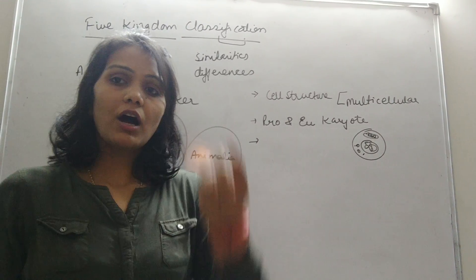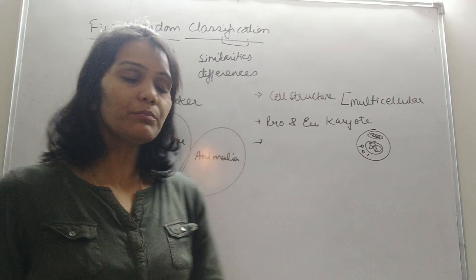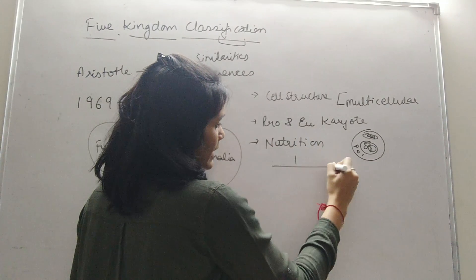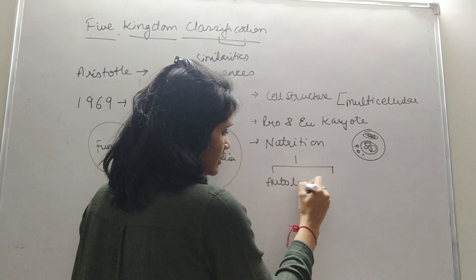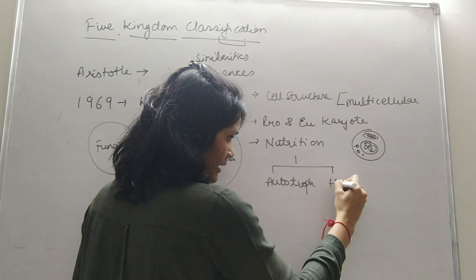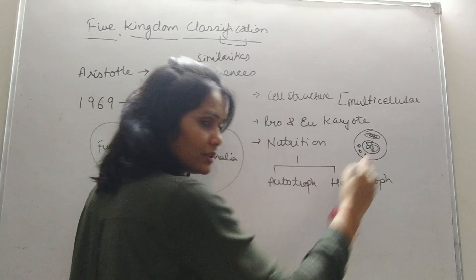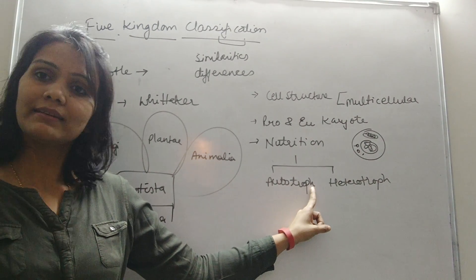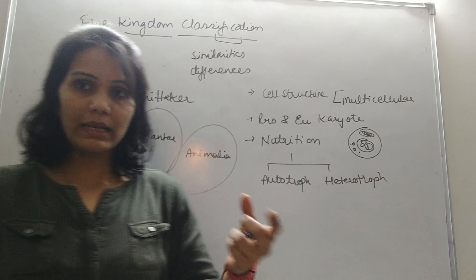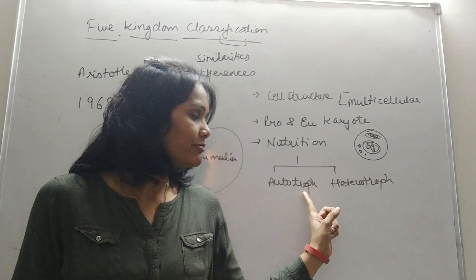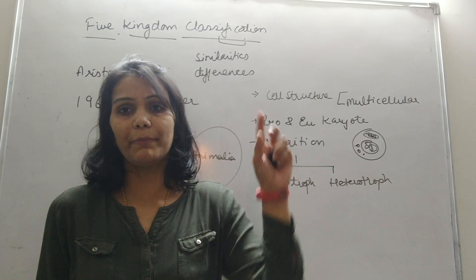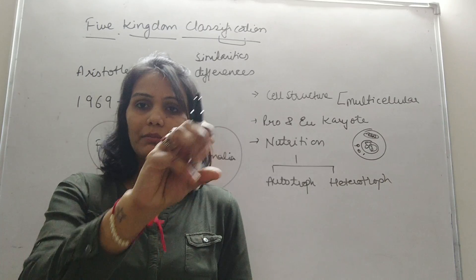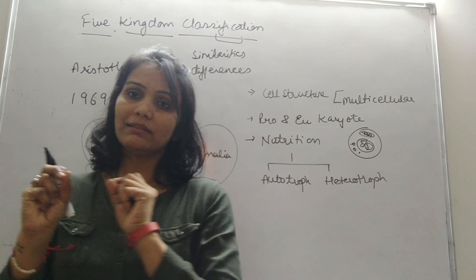The next criterion is mode of nutrition — how they intake food. Whether the organisms are able to prepare their own food; they are autotrophs ('auto' means self, 'troph' means feed). Plants are autotrophs because they make their own food by photosynthesis. Heterotrophs depend on other organisms for nourishment — whether they eat plants, animals, or both plants and animals.